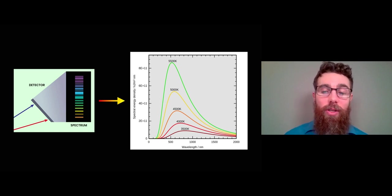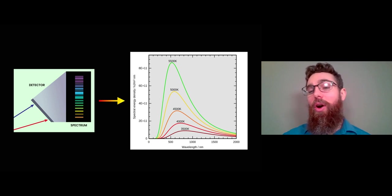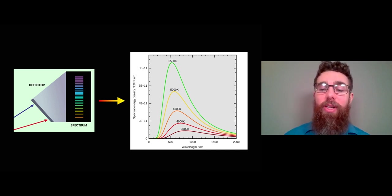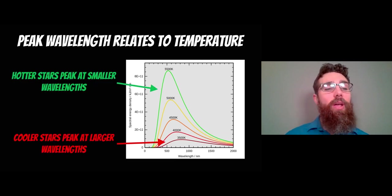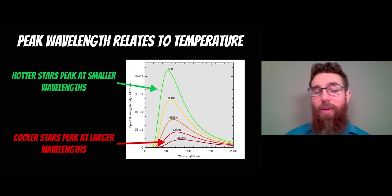Whereas the cooler stars, the redder stars, are towards the right-hand side of the plot—they peak at longer wavelengths. So our hotter stars peak at smaller wavelengths, cooler stars at larger wavelengths. That's our key thing.